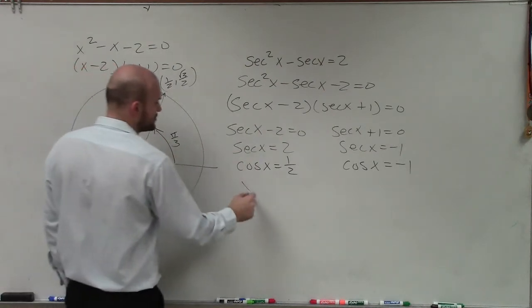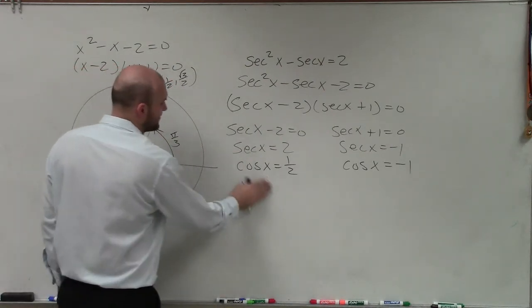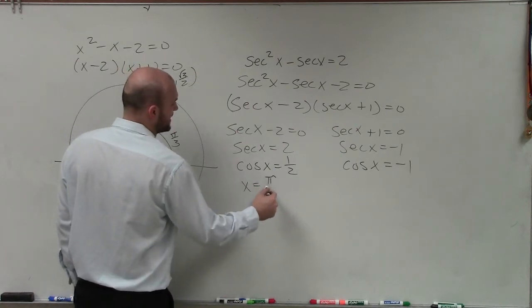So since the x coordinate is equal to 1 half, I know that's going to be a solution. So I can say x equals my angle, not 1 half, but my angle, pi over 3.